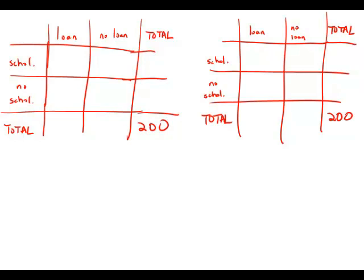First of all, 30% said they had received student loans. So 30% of 200 is 60. 60 received student loans, that means 140 didn't. And 40% said they received scholarships. Well, 40% of 200 is 80. So 80 received scholarships and 120 didn't. And I'm going to write this information in both tables.